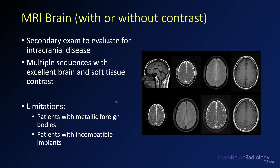MRI of the brain can be performed with or without contrast, and often you'll get images done with each — some before contrast and some after. This is really the workhorse of neuroradiology; it's the primary exam to evaluate and find intracranial disease. We have multiple sequences that tell us different things about tissue contrast. However, MRI has limitations: patients with metallic foreign bodies or devices often may not be able to get an MRI, and it also takes longer and is more expensive.